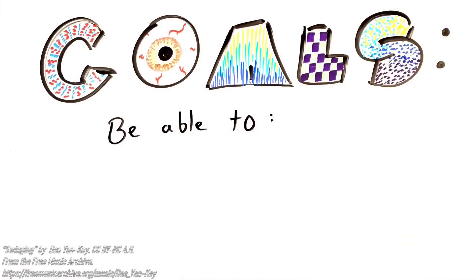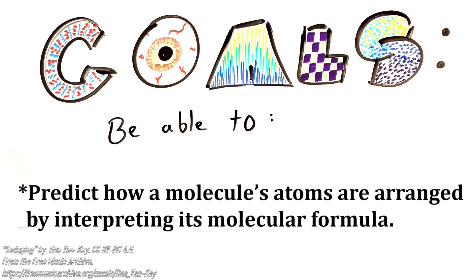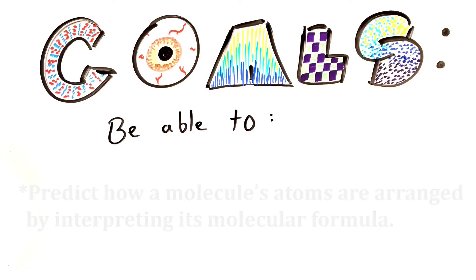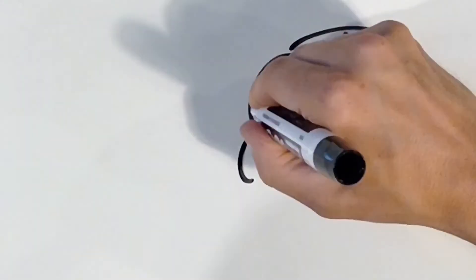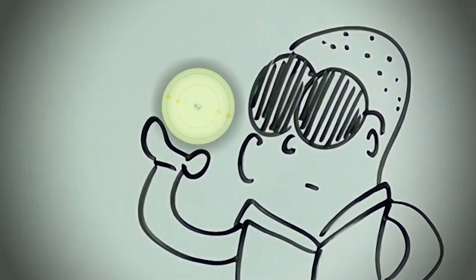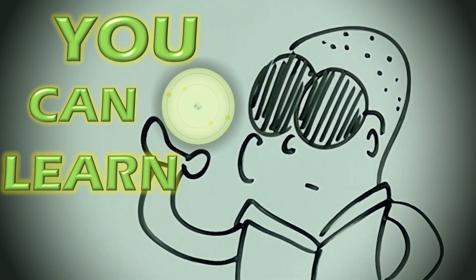Let's review our goal to make sure that you met it. After watching this video, you should be able to predict how a molecule's atoms are arranged by interpreting its molecular formula. If you can't do that, go back and watch the parts of the video that you didn't understand. You can find the timestamps for each practice problem in the informational section of this video. Until next time, remember — you can learn all of it.